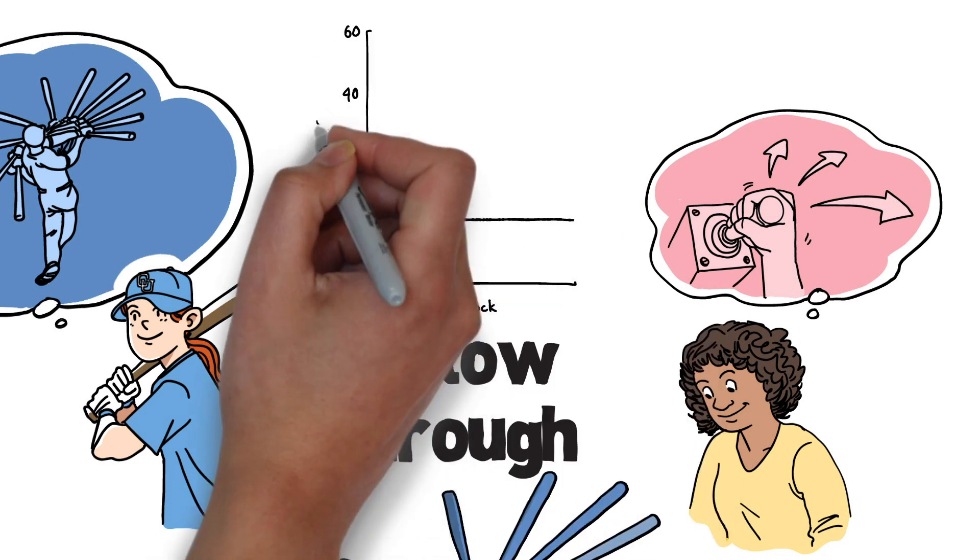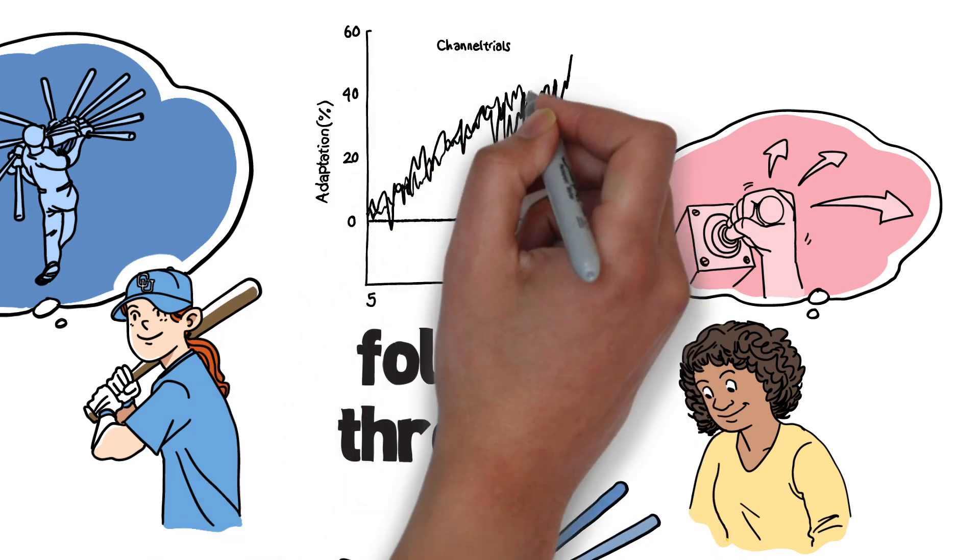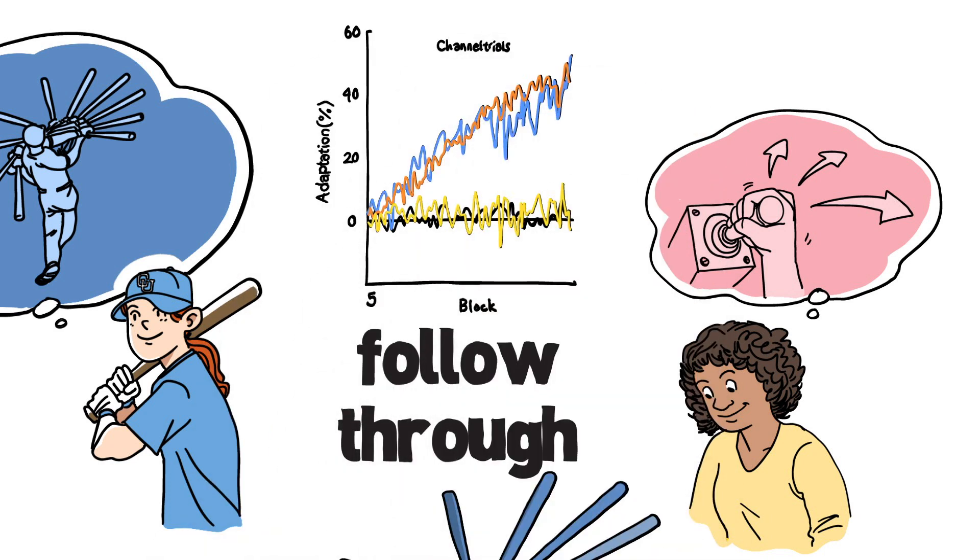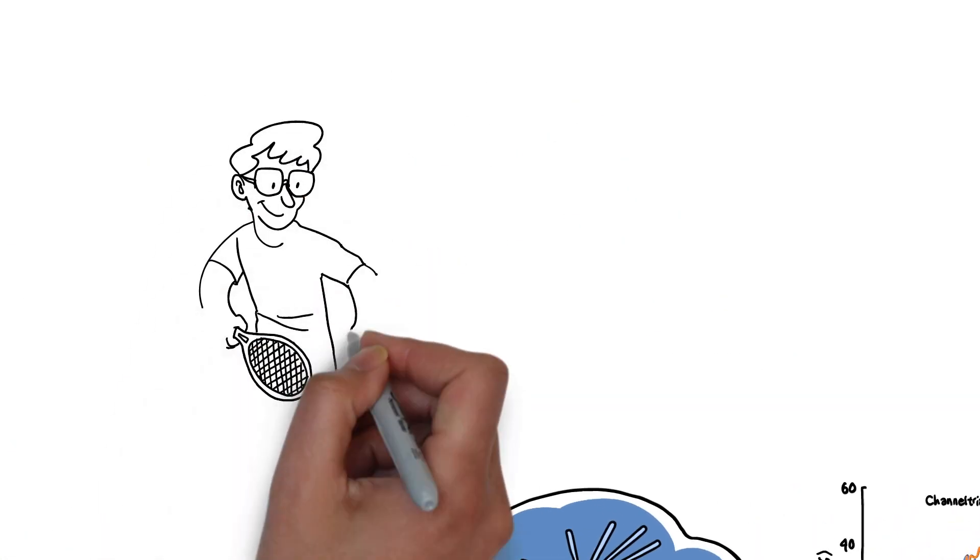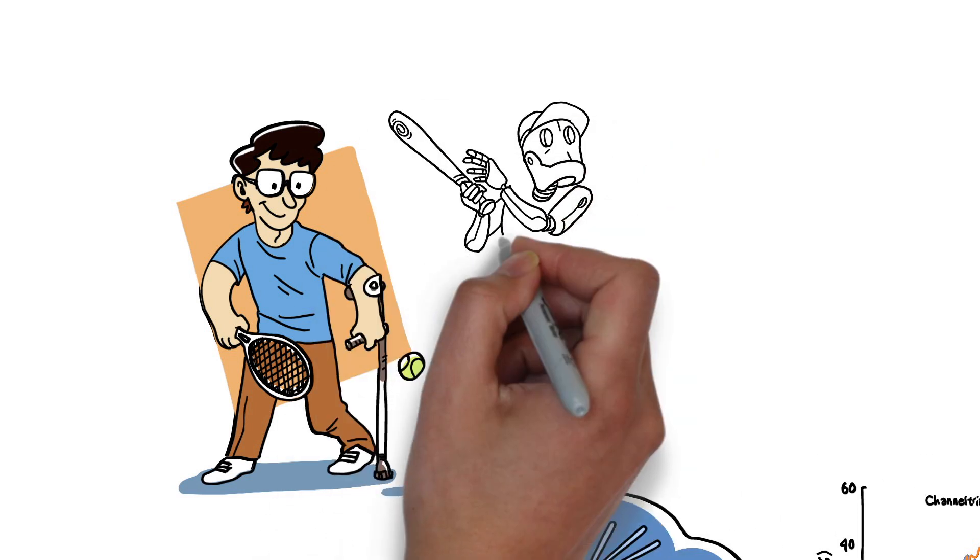Finding the mathematical algorithms that underlie movement is for me the greatest unsolved challenge facing neuroscience today. Uncovering this math will help us treat people with movement disorders and it may even help us build better robots.